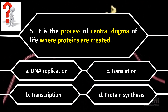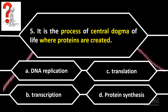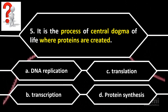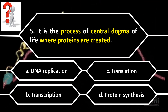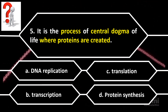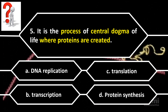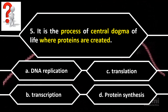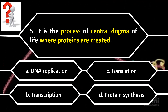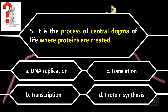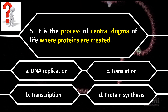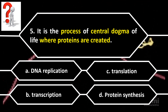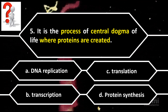Number 5. It is the process of central dogma of life where proteins are created. A. DNA replication. B. Transcription. C. Translation. D. Protein synthesis.